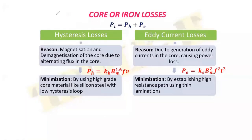Let's look at iron loss first. The total iron loss is the sum of hysteresis loss, represented as pH, and the eddy current loss. Now let's see what hysteresis loss and eddy current loss are, how they are produced, and how we can minimize them.